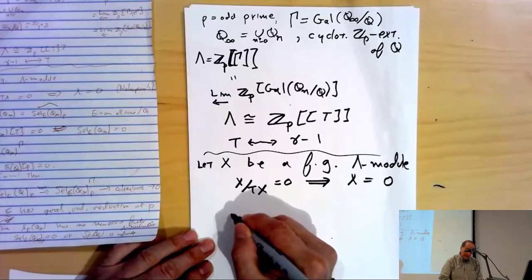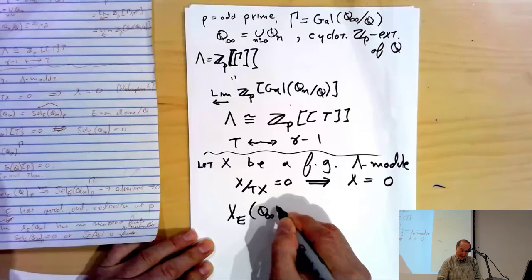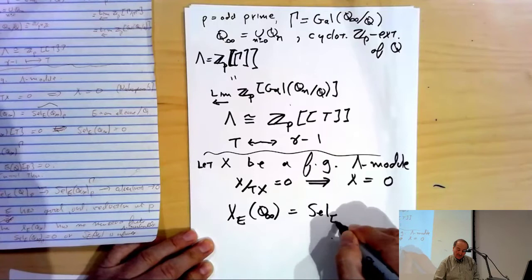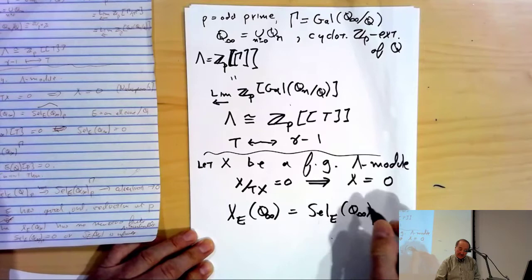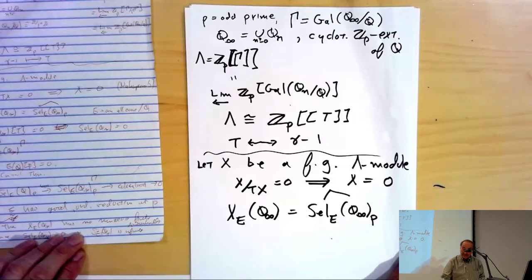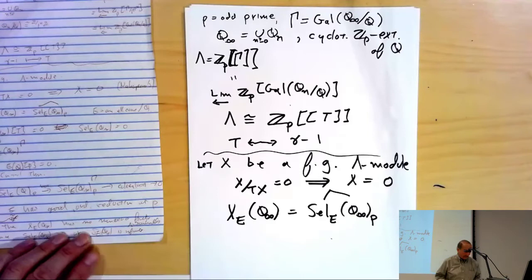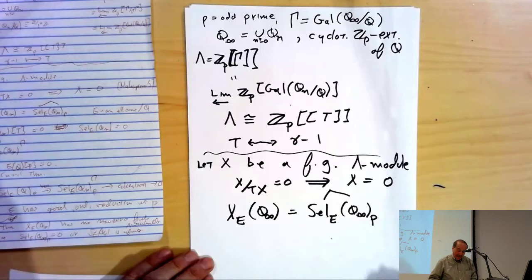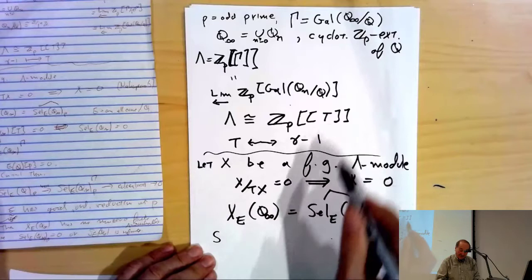The module I'm interested in is X_E(Q∞), which is the Selmer group for E over Q∞, the p-primary subgroup, and the Pontryagin dual of that. That is in fact a finitely generated Λ-module — though not always, until I add some assumptions, a torsion Λ-module. I can translate this remark from Nakayama's lemma into a statement about the Selmer group.